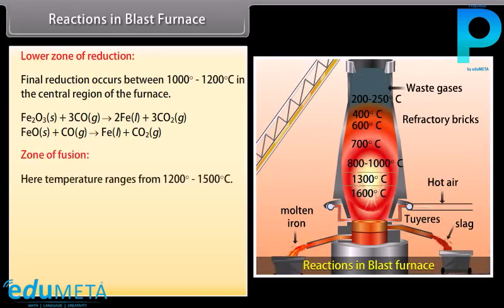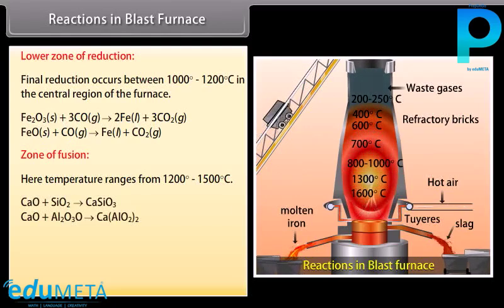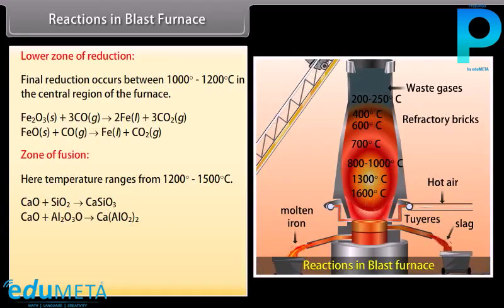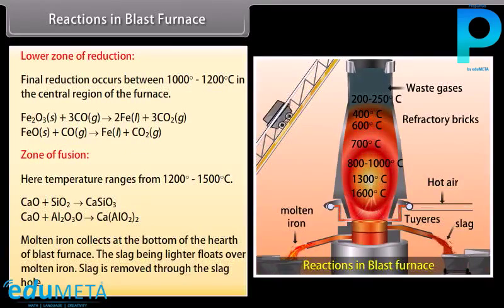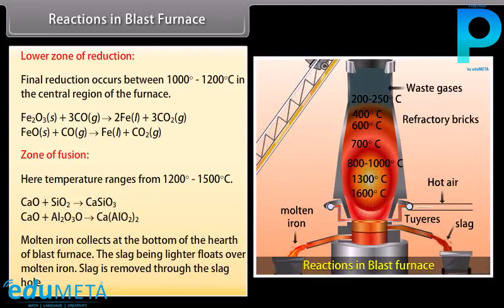Zone of fusion: Temperature ranges from 1200°C to 1500°C. Limestone decomposes into calcium oxide, which acts as a flux and combines with impurities of SiO₂ and Al₂O₃, removing them as slag. Molten iron collects at the bottom of the hearth of the blast furnace. The slag, being lighter, floats over the molten iron and is removed through the slag hole.